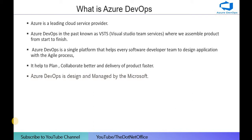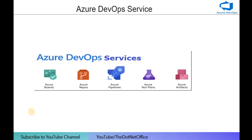Azure DevOps is a single platform that helps every software developer team to design applications with the agile process. The agile process is basically a process where we give a time limitation, and within that time we have to deliver the product with development and testing. This process contains sprints and scrums. Azure DevOps is designed by Microsoft.